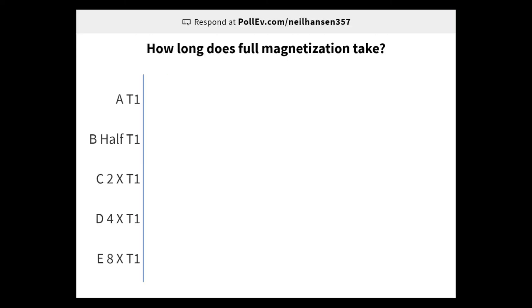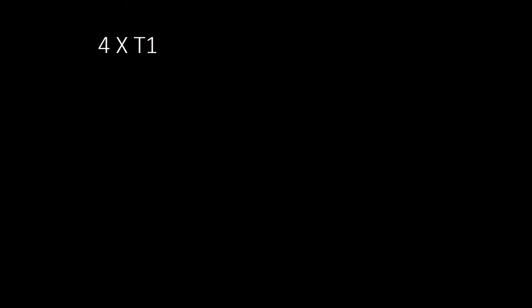Question: how long does full magnetization take? The correct answer is not T1, because T1 is the time it takes for 63% of magnetization. In general, full magnetization takes about four times T1 — that's a good ballpark estimate. Four times T1, and you're pretty much back at full longitudinal magnetization.